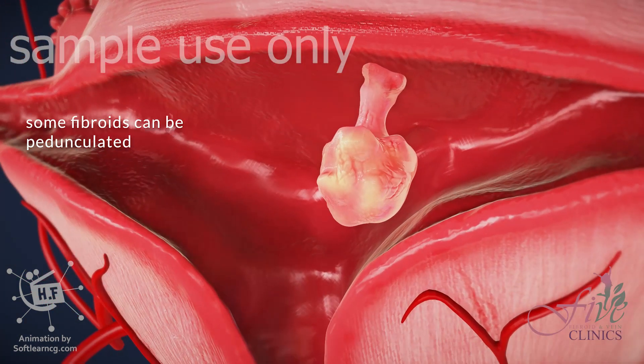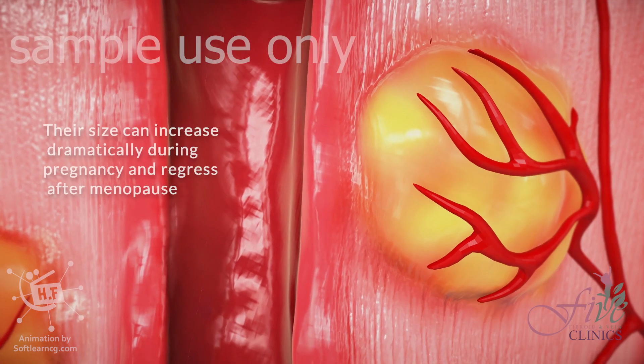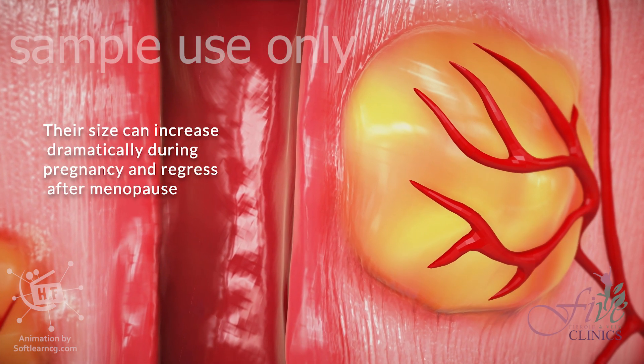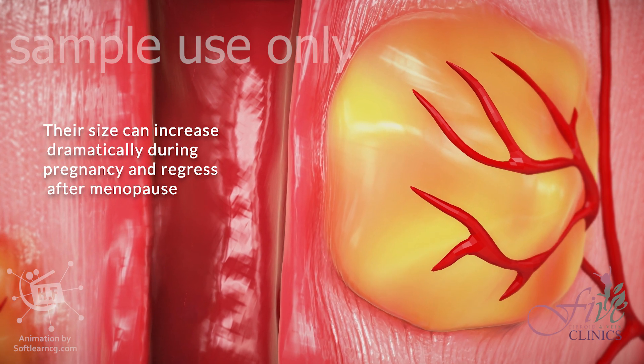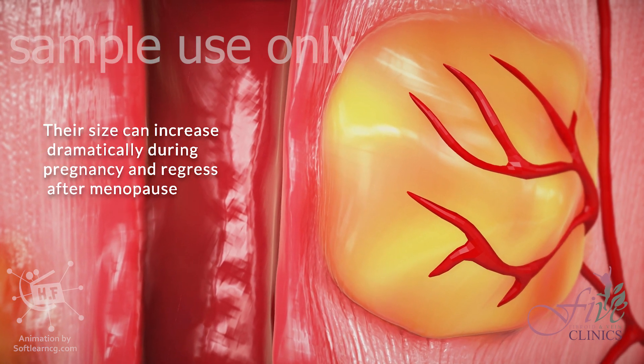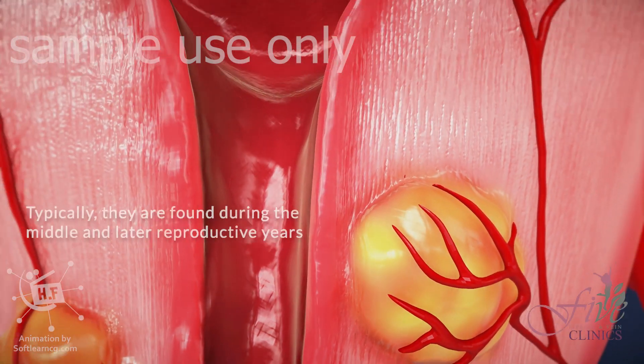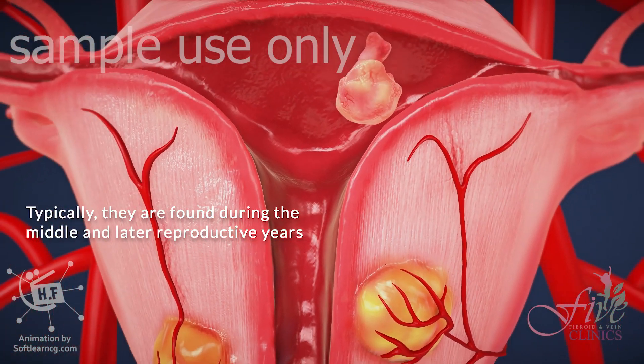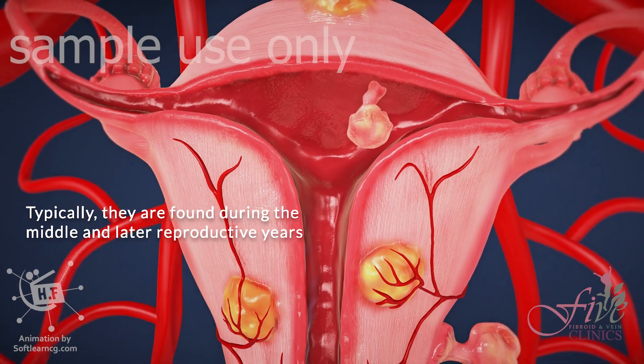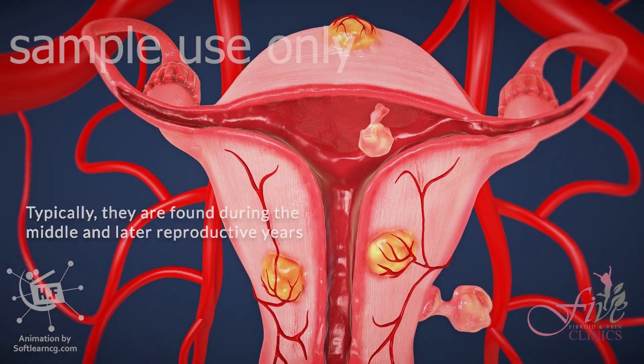Some fibroids can be pedunculated. Their size can increase dramatically during pregnancy and regress after menopause. Typically, they are found during the middle and later reproductive years.